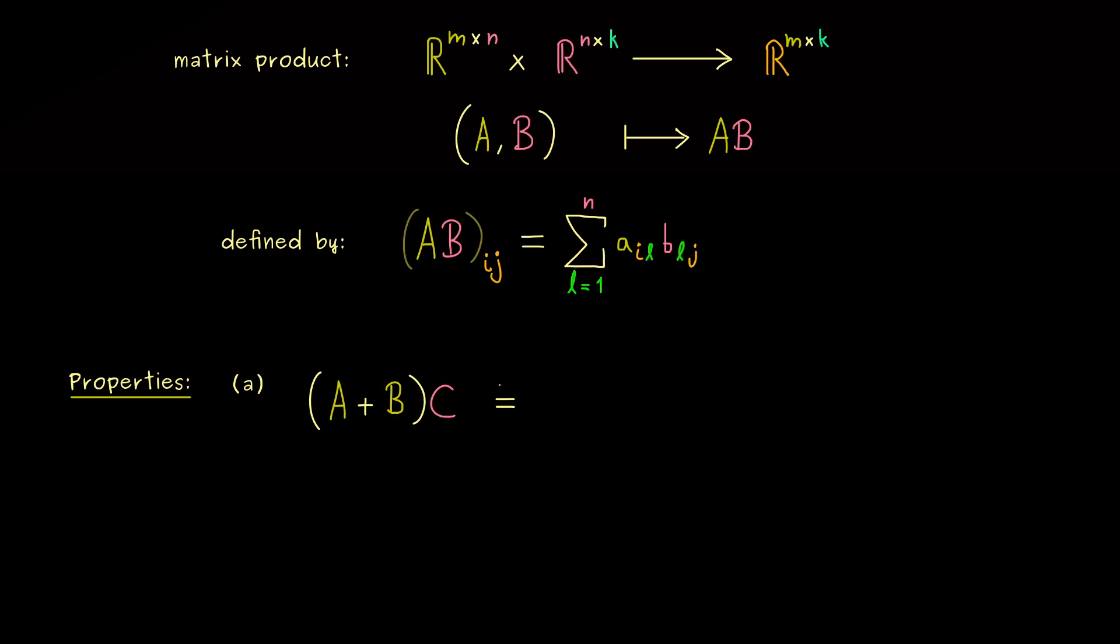However, in this case then we can write the whole thing as two multiplications. So we have A times C plus B times C.